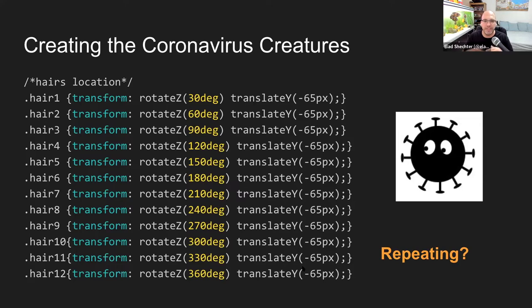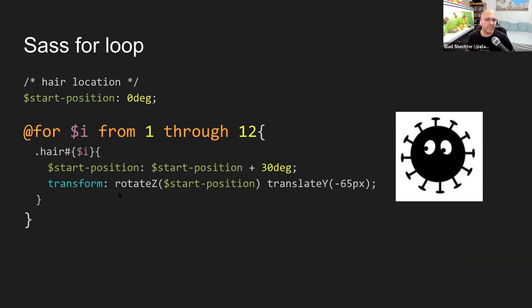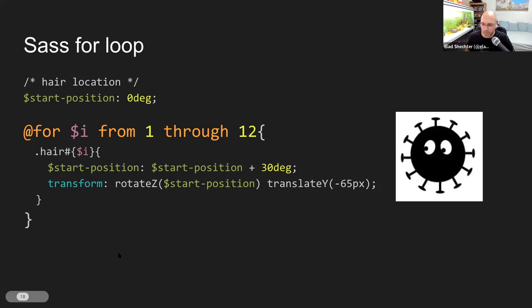There's a lot of repetition in this code, and we as web developers don't love repetition. Because I'm working with Sass I can create a Sass for loop. First I create a Sass variable called 'star position' with a value of 0 degrees, then a for loop with a variable 'i' going dynamically from 1 to 12. In every iteration it dynamically creates the CSS selector between l1 and l12, the star position variable gets bigger by 30 degrees, and I put that variable inside the rotate-z value of the transform property — generating all this CSS automatically.